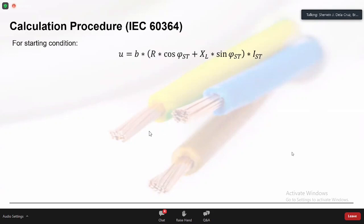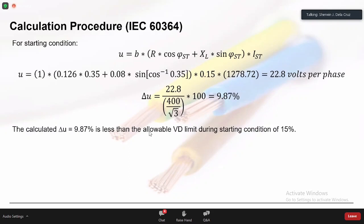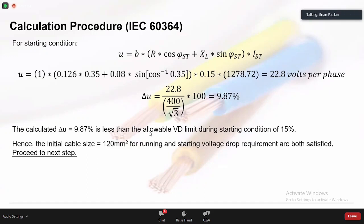Step 4 continued — verify voltage drop during starting conditions. Using starting PF = 0.35 and starting current = 1,278 A: small u = 22.8 V/phase. Percentage voltage drop ΔU = 22.8 / (400/√3) × 100 = 9.87% — which is less than the 15% starting limit. Starting condition: passed. The 120 mm² cable satisfies both running and starting voltage drop requirements.